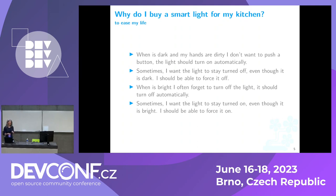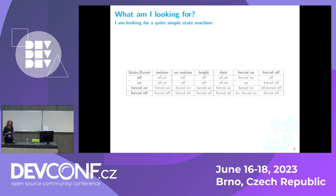Another way to say what I'm saying is this: what I want is a state machine. It's a quite simple state machine. It has four states, and in this case we are managing six events.